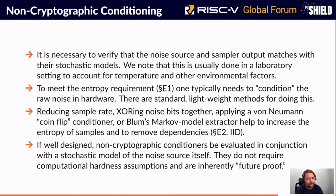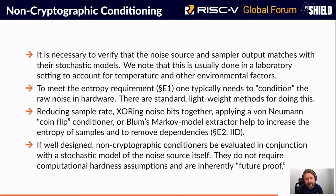It's very unlikely that your noise source has exactly 8 bits of entropy per 16-bit output, so you need non-cryptographic conditioning. To meet the entropy requirement you might use a von Neumann conditioner, XOR bits together, reduce the sample rate, or something else, as long as you meet the criteria. These are evaluated together — it's not just a statistical test on the output; you must show a bound or estimate for the entropy. This also makes it future-proof because there are no computational hardness assumptions, so you can use this with any DRBG at any security level.